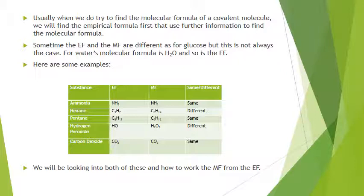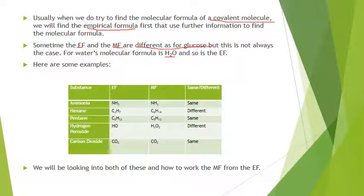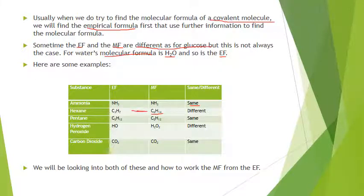Usually when we try to find the molecular formula of a covalent molecule, we find the empirical formula first, then use further information to find the molecular formula. Sometimes the empirical and molecular formulas are different, as in glucose, but not always. For instance, water is H2O for both formulas, ammonia is NH3 for both. For hexane, the empirical formula is C3H7 while the molecular formula is C6H14 — twice the empirical formula.